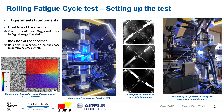Regarding crack length monitoring, we could not use the potential drop method due to the contact of crack lips imposed by the compression. So the crack length was determined by direct optical observation in dark field illumination on the other side of the specimen, thanks to an optical contrast using four low-angle LED lighting sources.